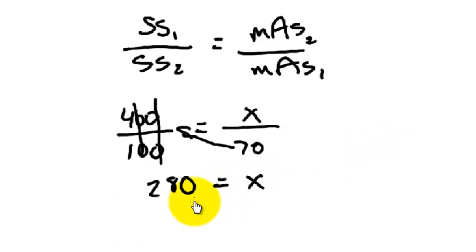So you can kind of check your work here and see that you're starting with a 400 screen system, which we know is much faster. So we know we're going to need more mAs when we switch to a slower screen speed.